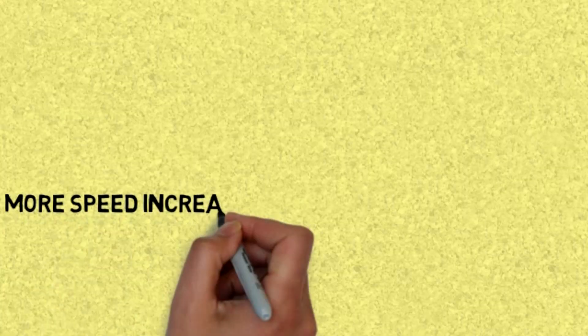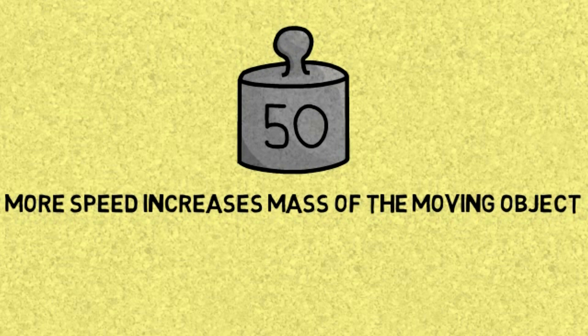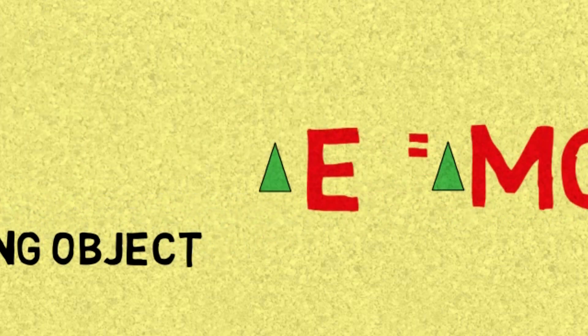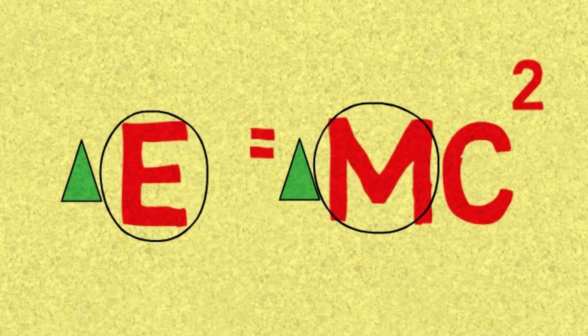The energy that an object has and gains due to its speed will contribute and add to its mass — and this is the critical idea here. When an object is moving, the faster it goes, its mass increases, because the energy that caused it to speed up is increasing. There is a relationship between mass and energy. When an object speeds up, the mass doesn't increase linearly — it actually increases exponentially.